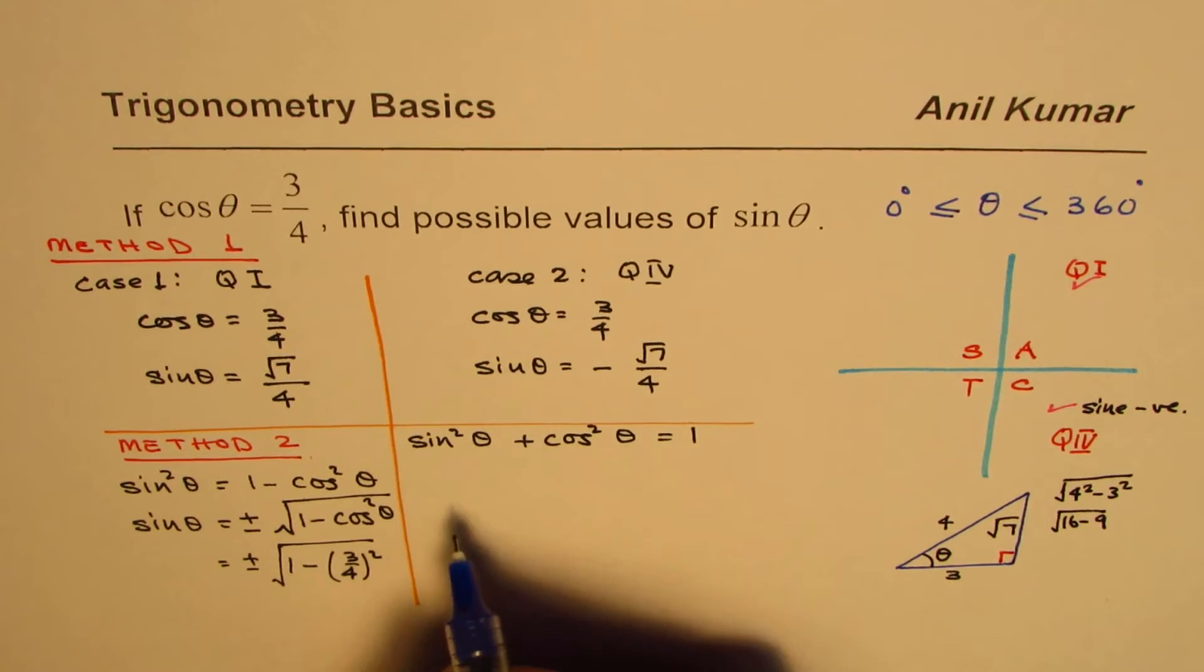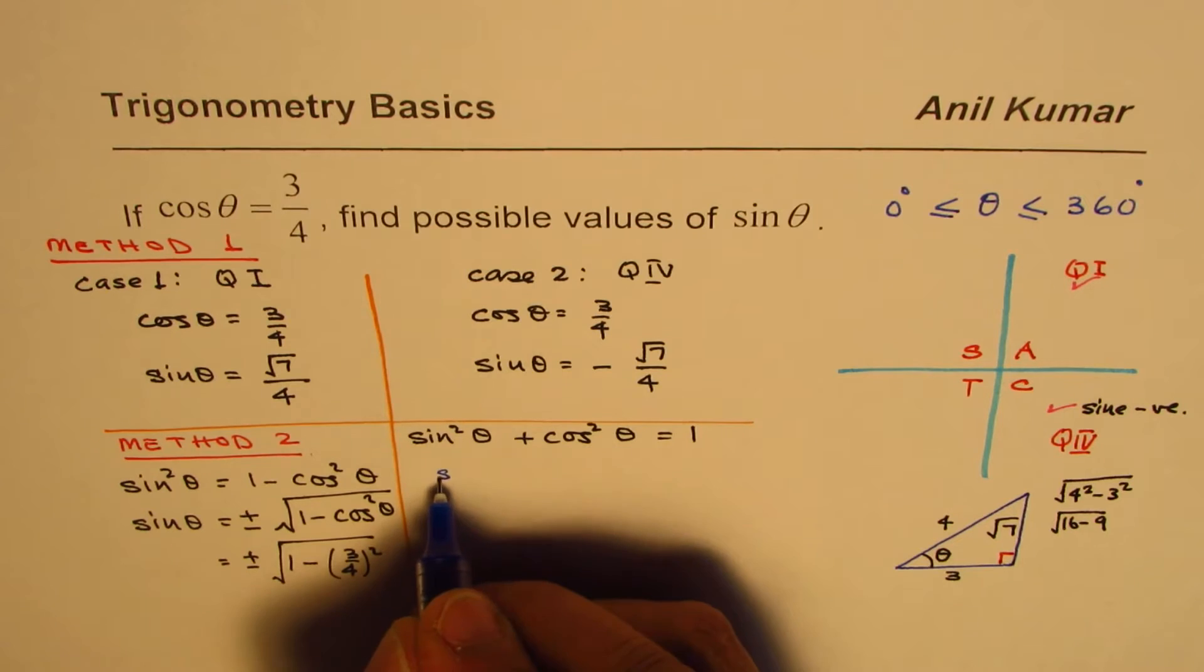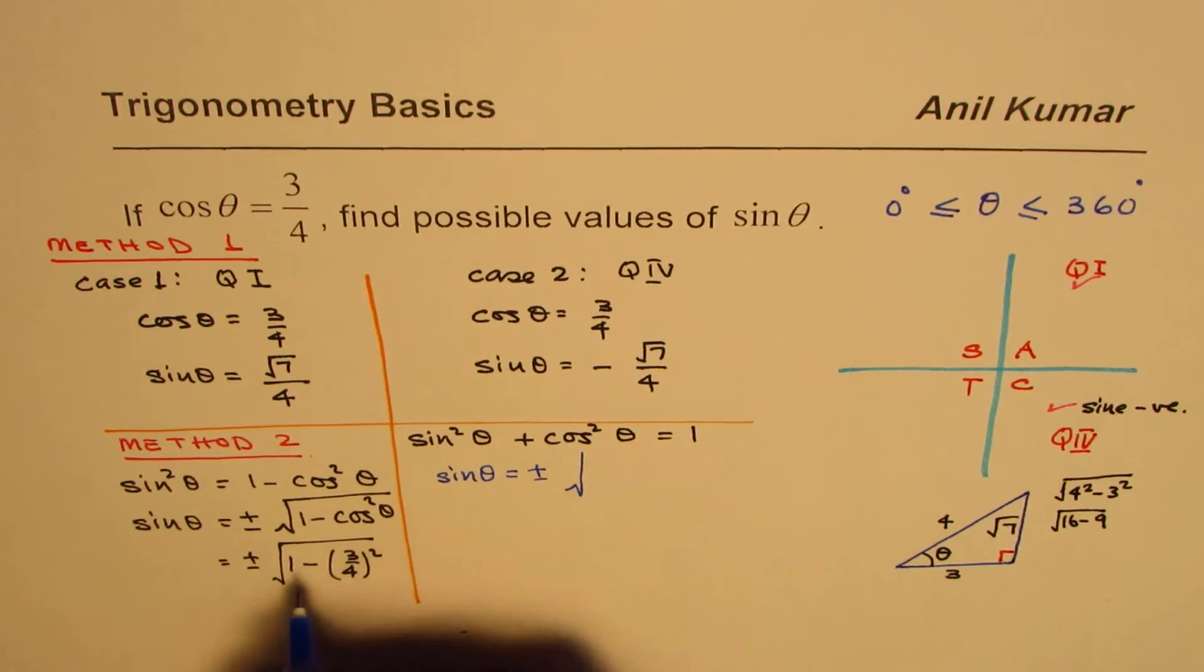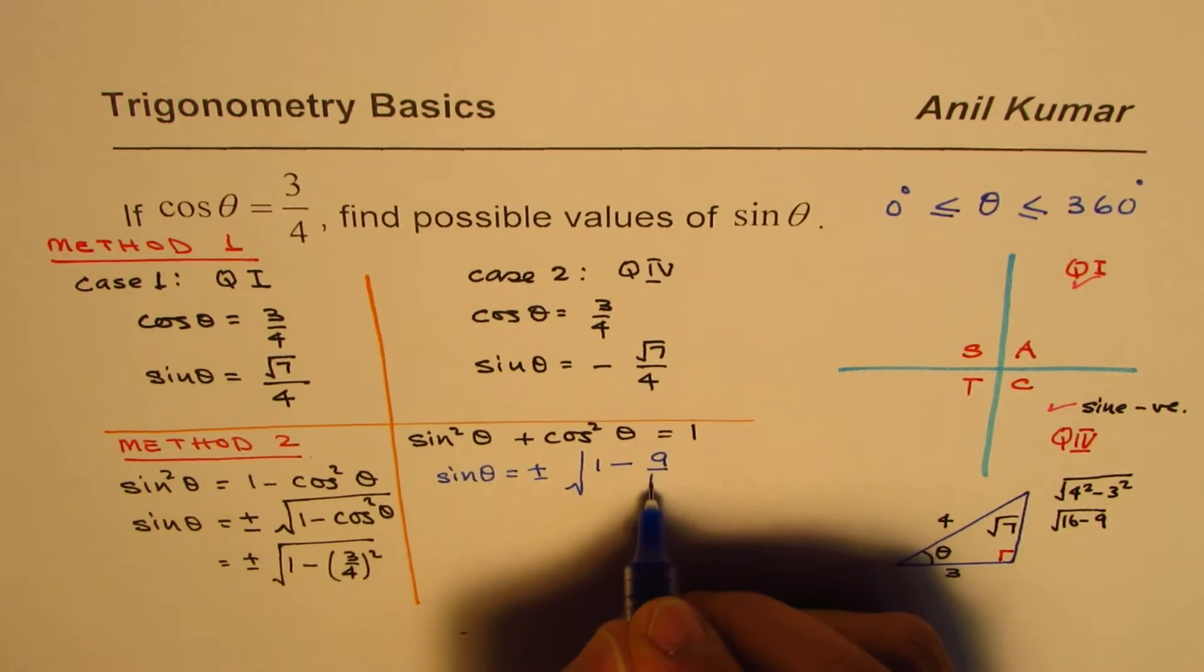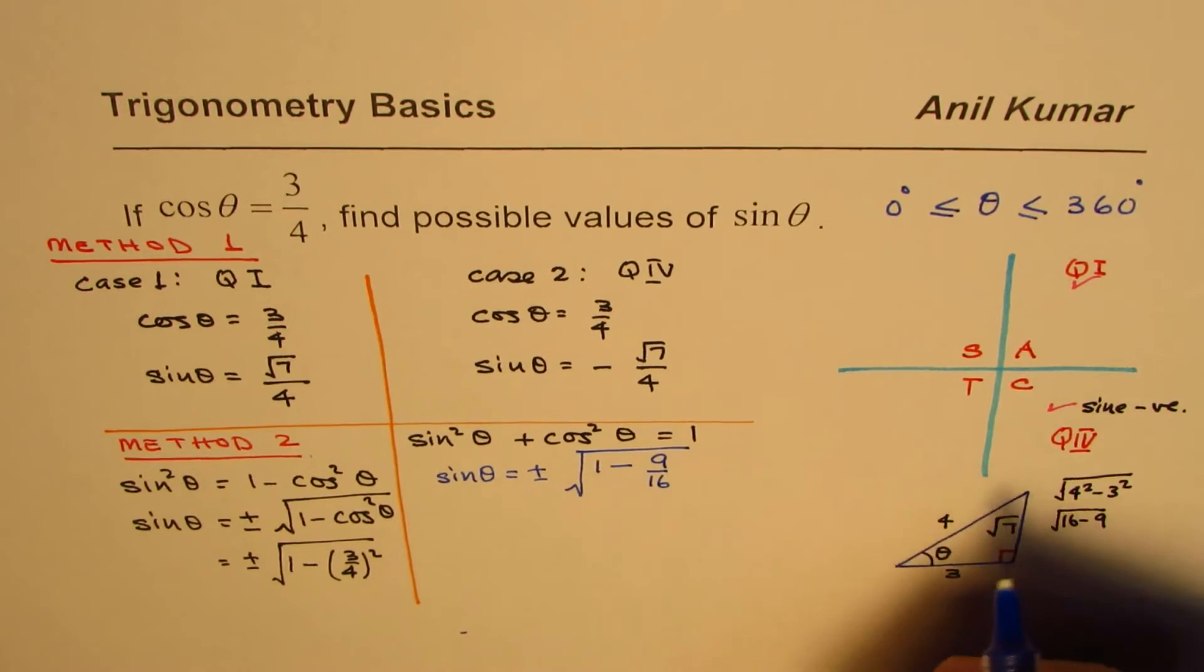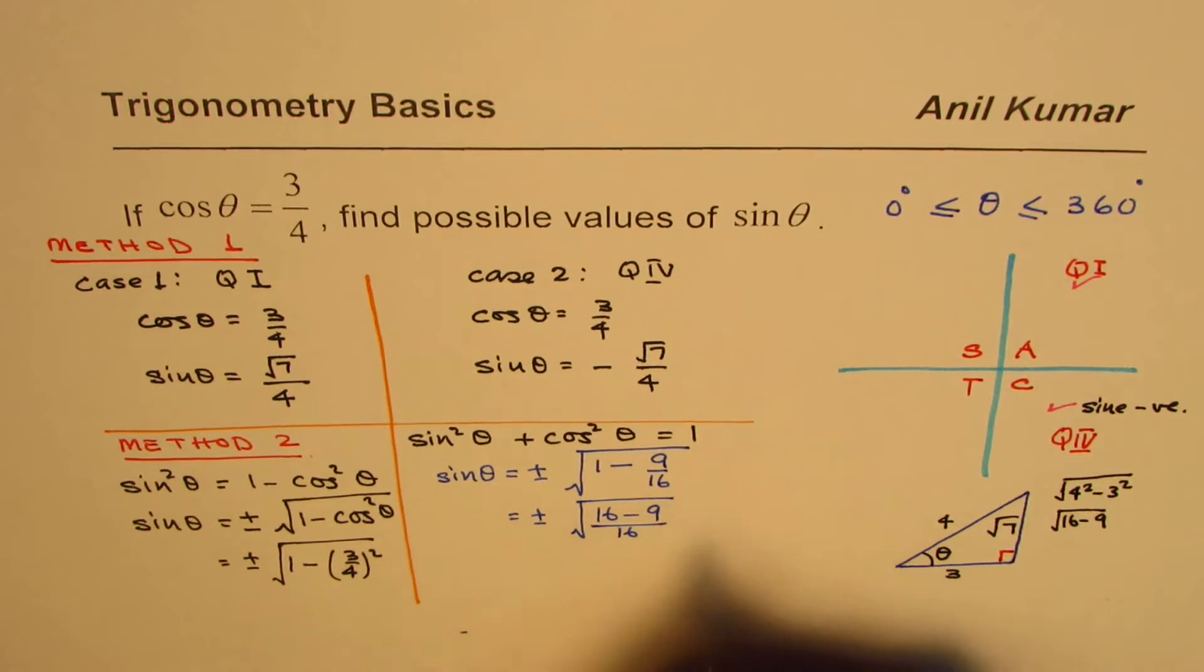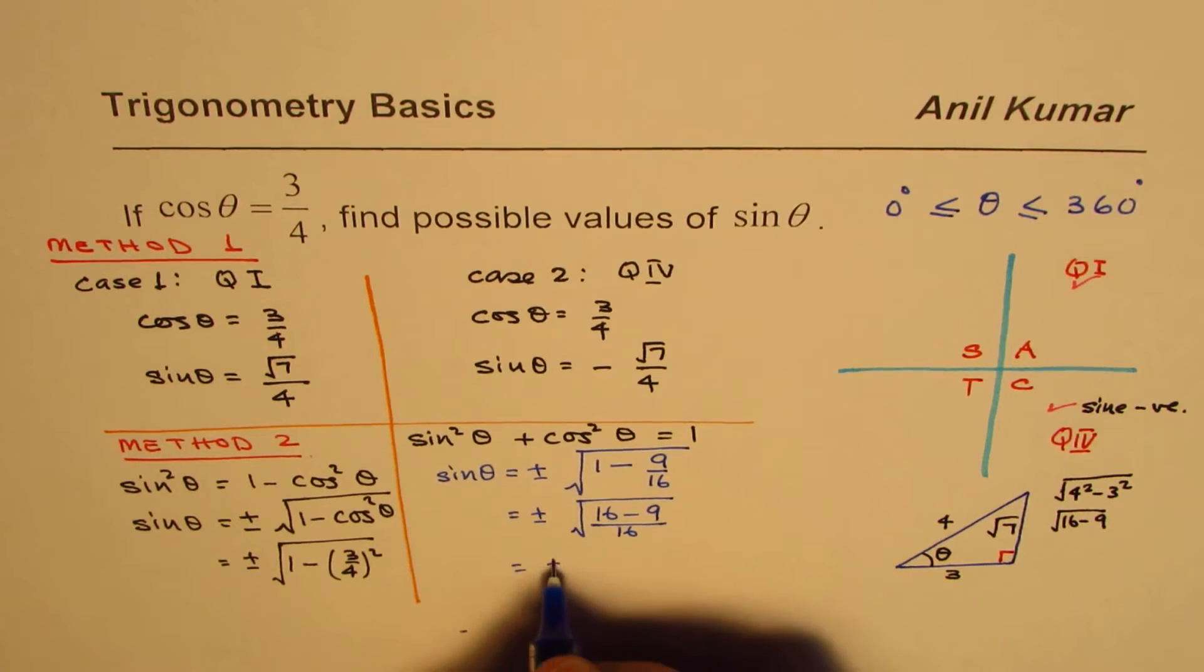So let us solve this on the right side. So we get sin theta equals to plus minus square root of 1 minus 9 over 16, which is plus minus square root of 16 minus 9 over 16.